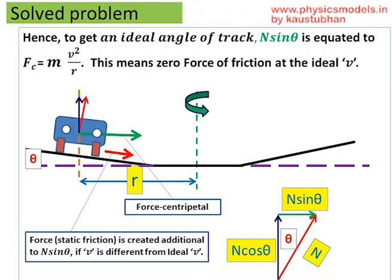Now, the red arrow that is showing the frictional static force will come into play only if the m v squared by r increases beyond N sin theta or goes below N sin theta which can happen if the velocity of the car is above or below 350 kilometers per hour.